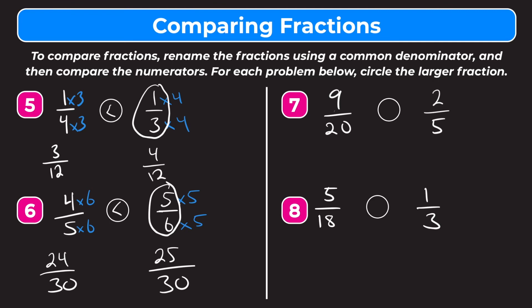So let's try number seven. We have nine-twentieths and two-fifths. The common denominator here is going to be twenty. Nine-twentieths is already there, so we bring that down — nine over twenty. For two-fifths, to make it over twenty we multiply by four: two times four is eight, and five times four is twenty, giving us eight over twenty. Nine is greater than eight, so nine-twentieths is greater than eight-twentieths, which means nine-twentieths is greater than two-fifths.